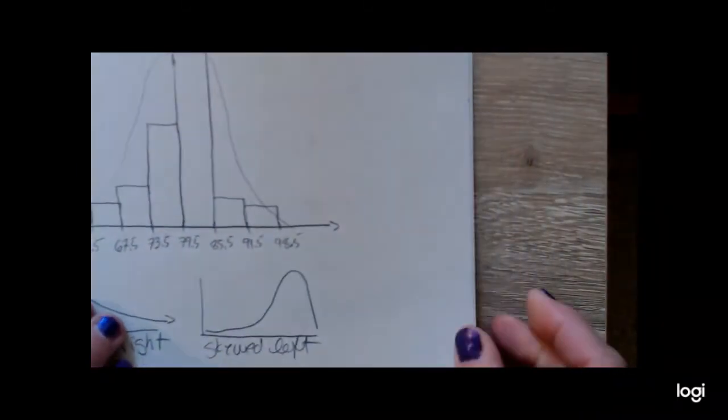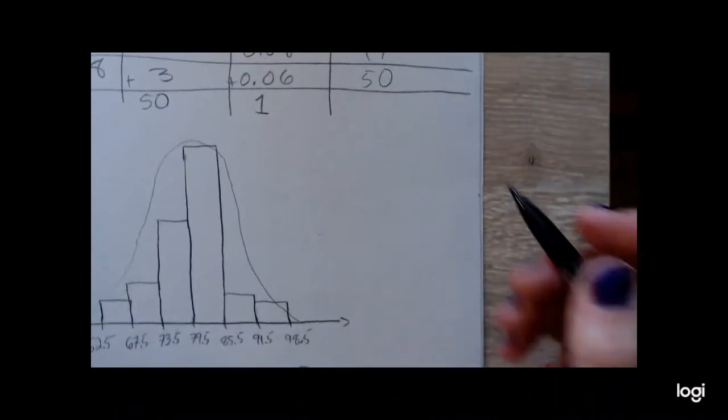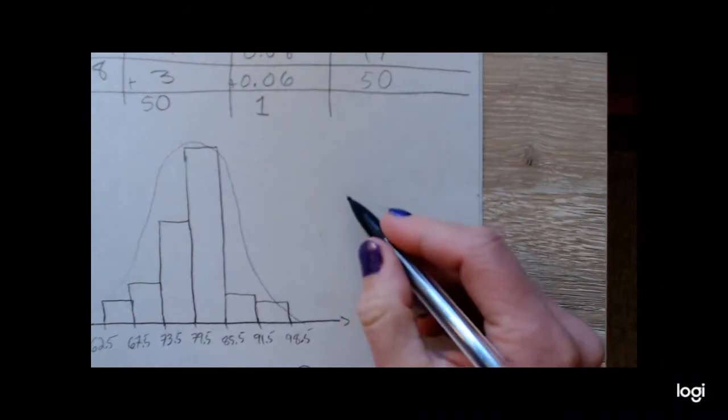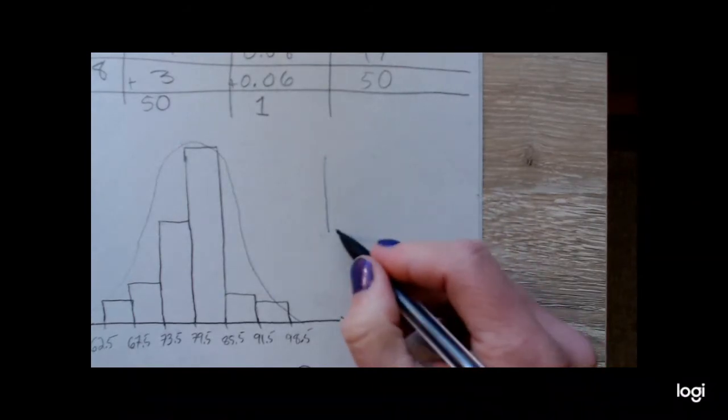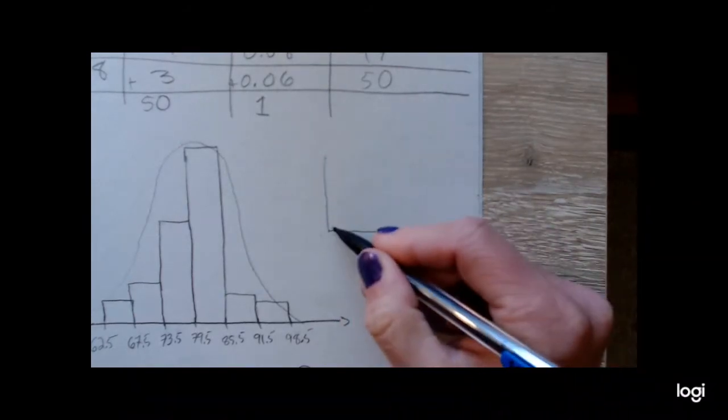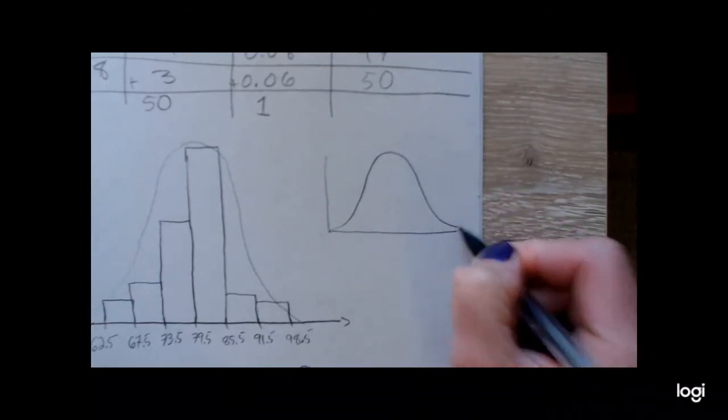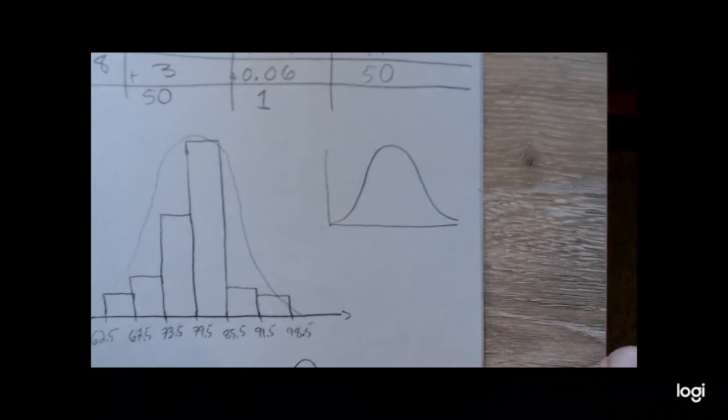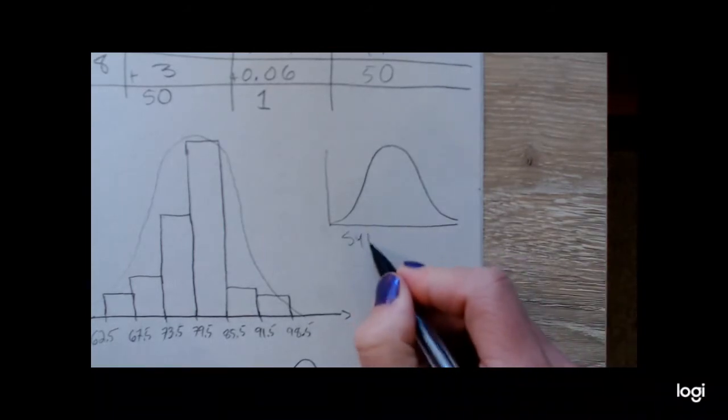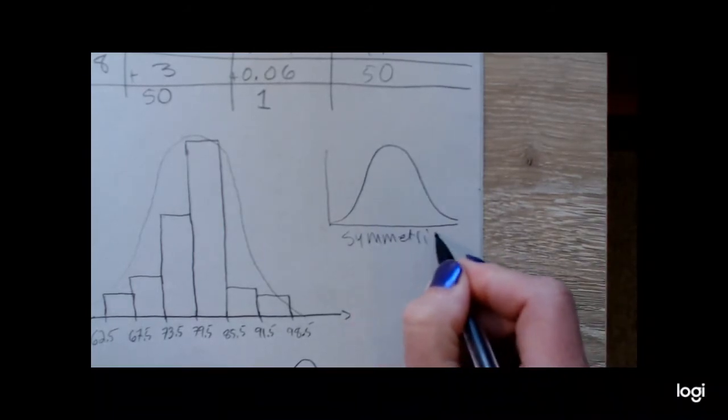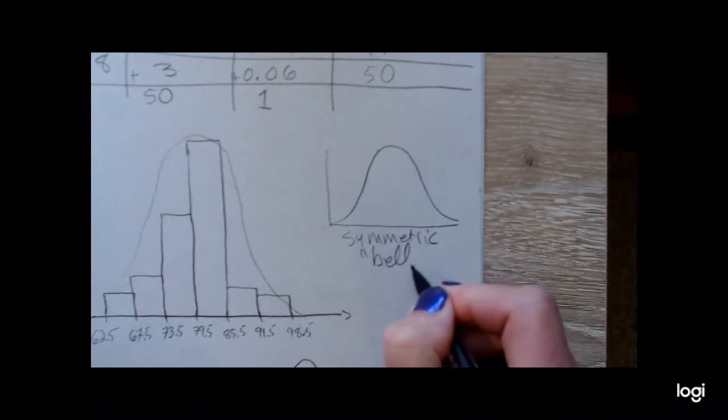And then if I have something that looks, if I trace the outline of the histogram and it turns out to be looking like a bell, we could call that symmetric or bell-shaped. Okay.